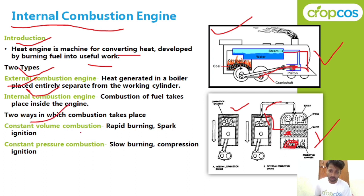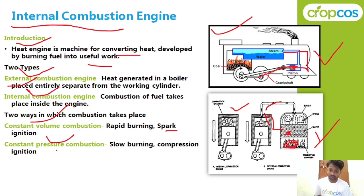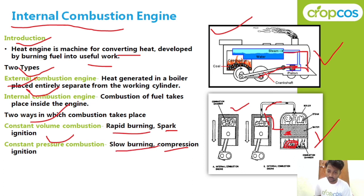There are two types of combustion cycles: constant volume combustion and constant pressure combustion. In constant volume combustion, a spark plug is used for ignition, and burning is rapid. In constant pressure combustion, burning is slow.